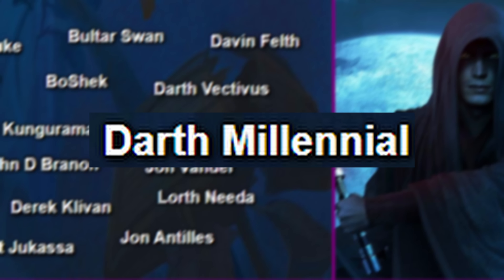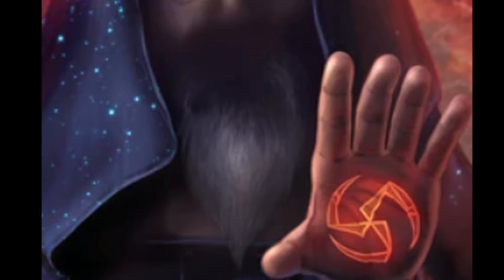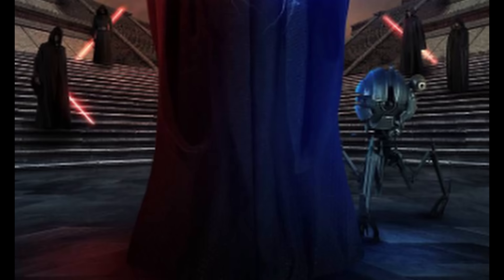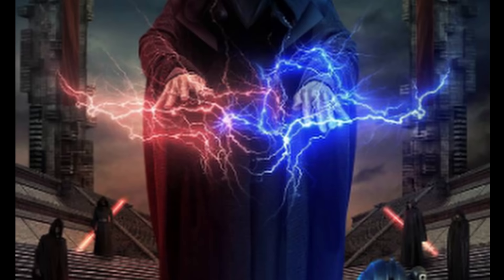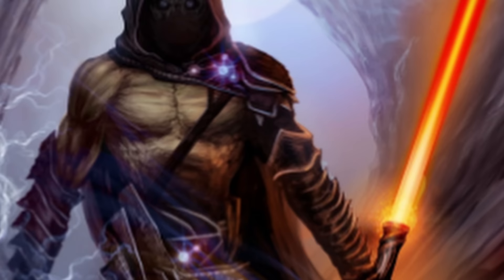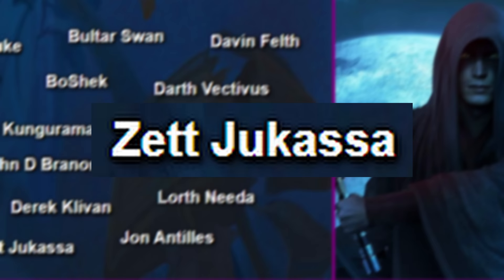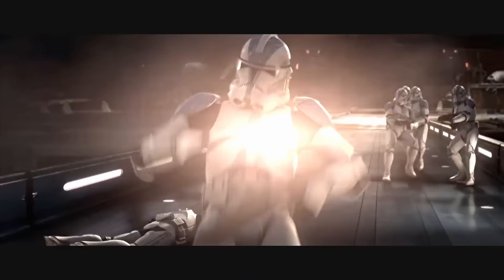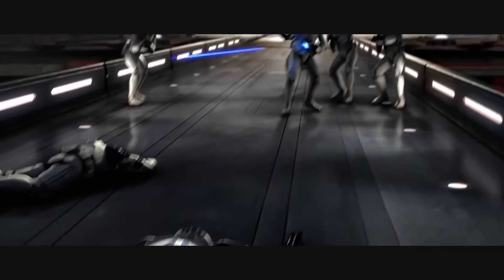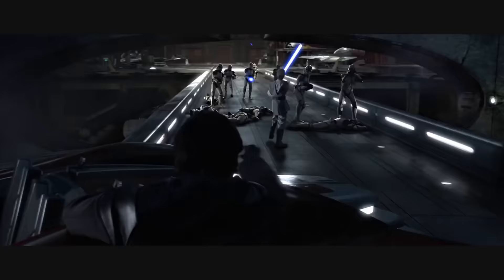Darth Millennial was a three-eyed mutant Sith Lord who lived over a thousand years before the Battle of Yavin. He didn't like a lot of the rules of the Sith, specifically the Rule of Two. He would end up leaving everything to settle on a swamp planet, kind of like Yoda. However, there he would start his own religion called the Dark Force, though he would eventually just die of old age. Zett Jukassa was a Jedi Padawan during the Clone Wars, seen fighting clones during Order 66 before being overwhelmed and killed. Fun fact: he was played by George Lucas' son, Jett Lucas.